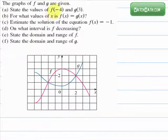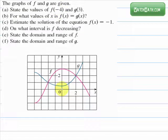Let's try to find f of negative 4. First, locate x equals negative 4. This is x equals 0, so x equals negative 4 will be 4 units to the left: 1, 2, 3, 4. So that's x equals negative 4.